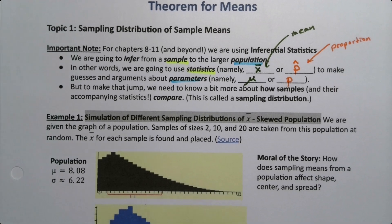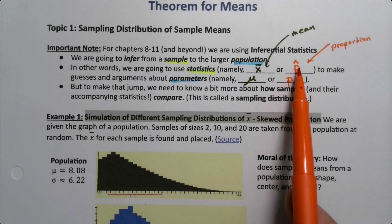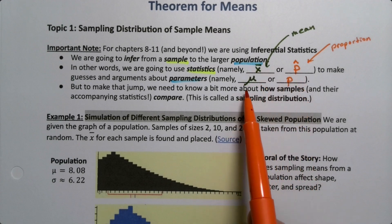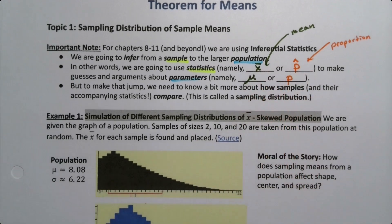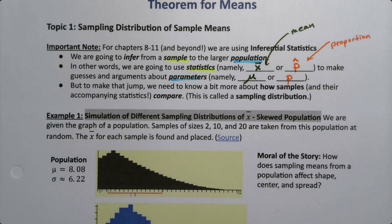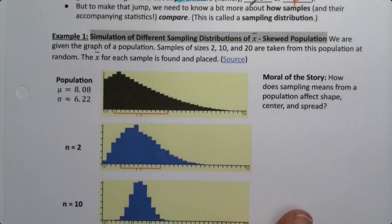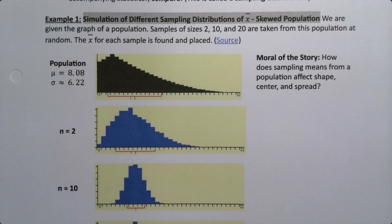To be able to make this leap from sample to population, we need to understand how samples compare to each other. And to do that, we need to talk about something called the sampling distribution, which is a little bit of a weird idea to get our brains around. So we're going to look at this in an applet on the web, which is where these pictures came from.